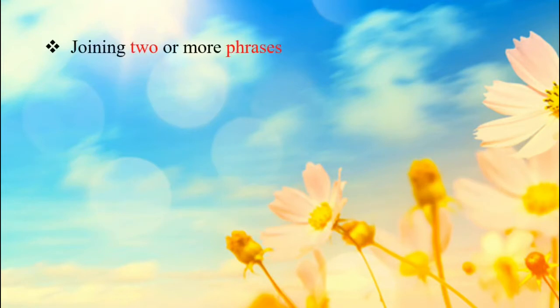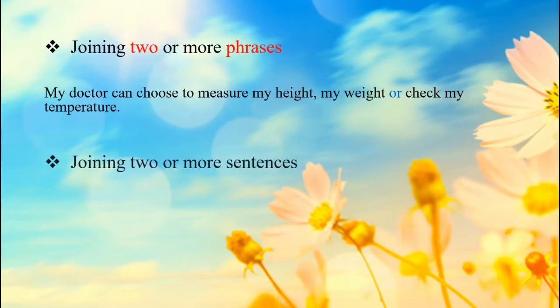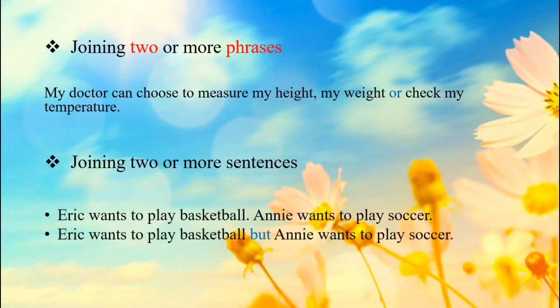We join two or more phrases with the help of conjunctions. For example: my doctor can choose to measure my height, my weight, or check my temperature. We also join two or more sentences with conjunctions. For example: Eric wants to play basketball. Annie wants to play soccer. We can write the sentence as: Eric wants to play basketball, but Annie wants to play soccer.